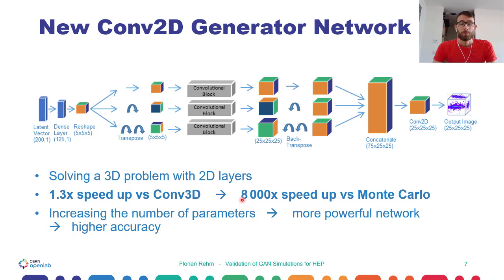With the transition from convolutional 3D to convolutional 2D, we also doubled the number of parameters in the neural network, which means that we expect also a higher physics accuracy. I will provide you a detailed evaluation of the physics accuracy of our GAN model on the next slides.